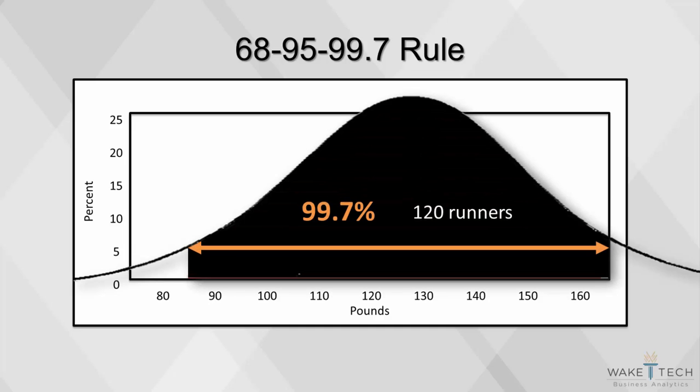Finally, according to the rule, 99.7% of our runners, or 119.6 runners, should fall within three standard deviations of the mean, or within a range of 81.3 pounds to 174.3 pounds. According to our data, all 120 runners fall within this range, so it seems as if the rule is pretty accurate in this case.